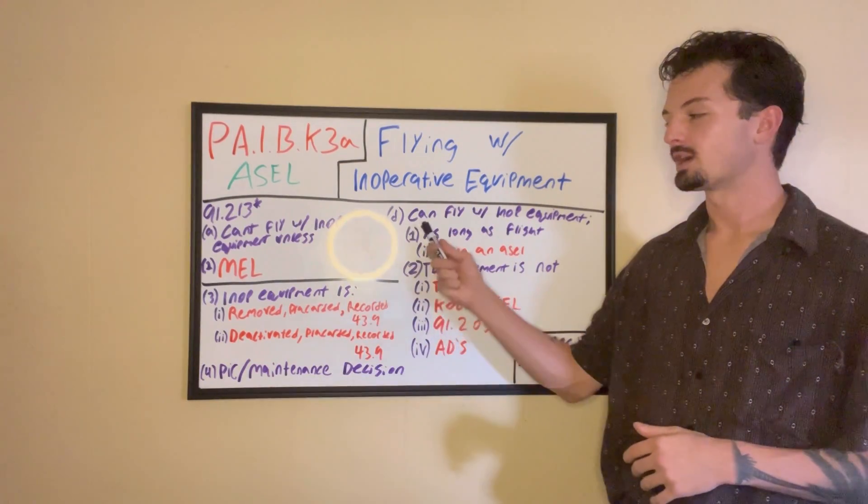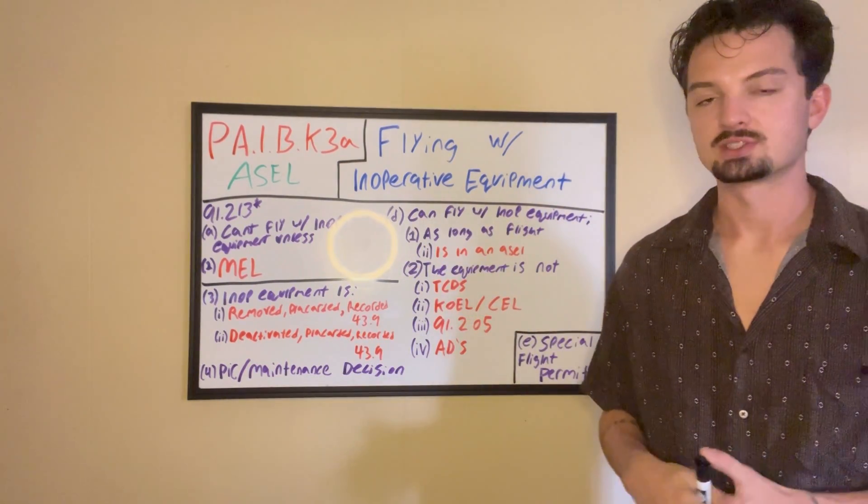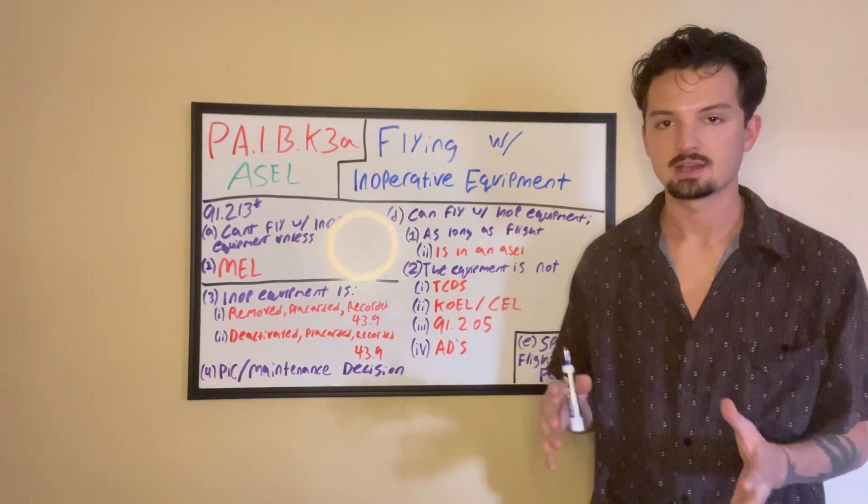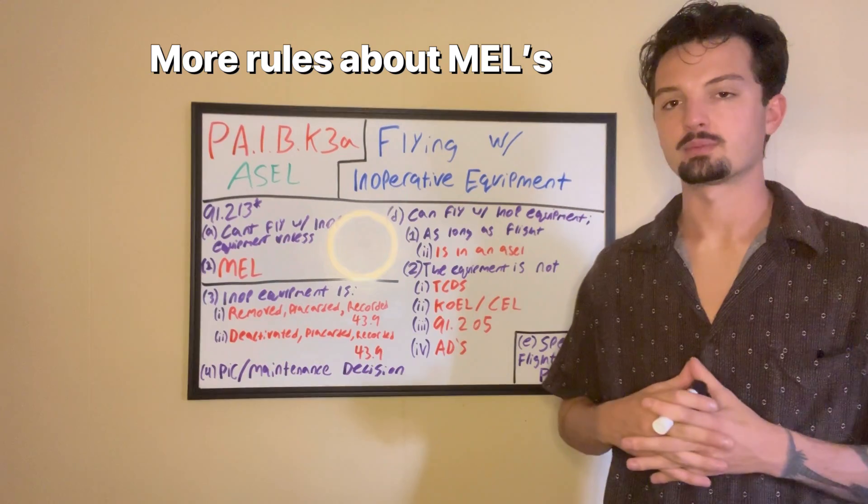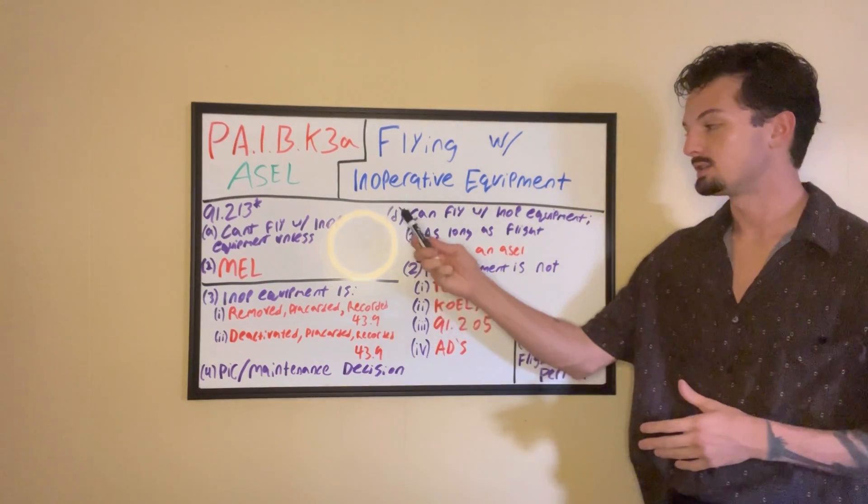And so 91-213 kind of dives into some further requirements for minimum equipment lists. We're not going to talk about that, but if you're curious, go check out 91-213. And next, we're actually moving up here. Whiteboard kind of goes in a weird order, but we're skipping B and C. Again, these are things that don't really apply to us when we're getting our private pilot license. So we're going to D,